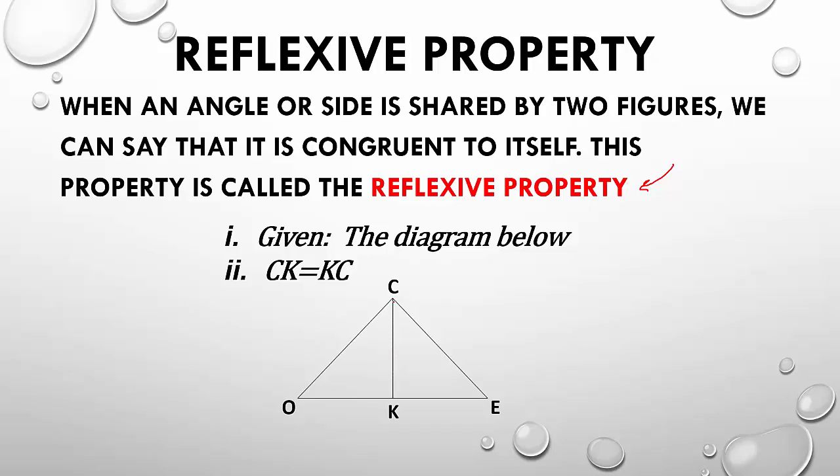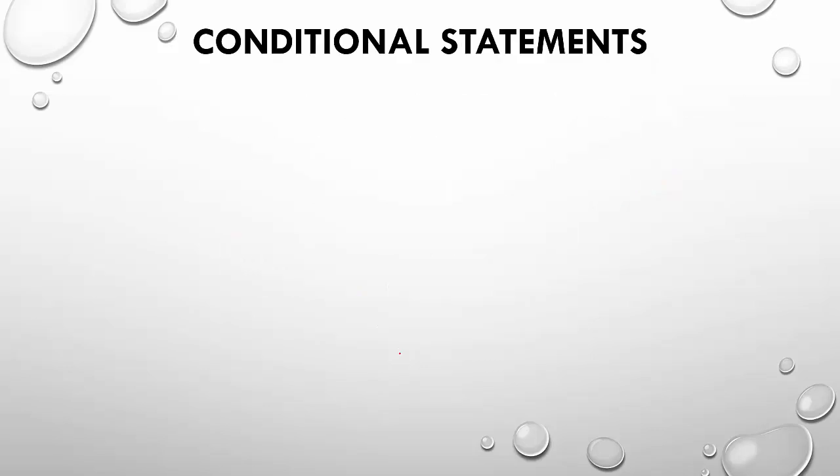you could say that CK, so, it's basically going that way, is equal to or congruent to KC. Okay? So, it is, not basically, it is the same two letters, just flipped, and they don't even necessarily have to be flipped. But, if you have the same two letters, and we're saying that they're equal or congruent to themselves, then that is the Reflexive Property. So, if we were given this problem, right here, without any of this, and they asked you what the property was, this would be the Reflexive Property.